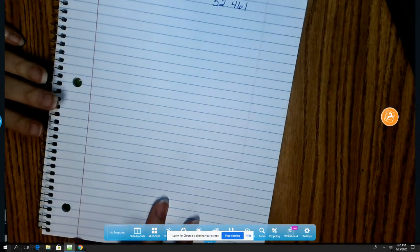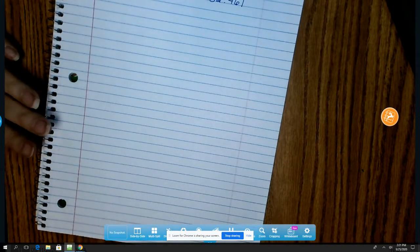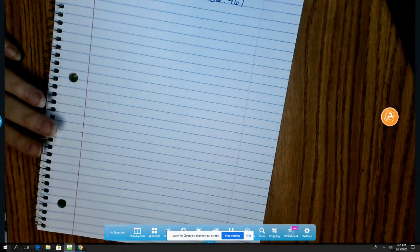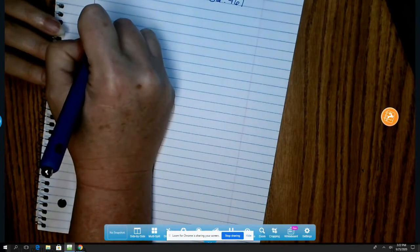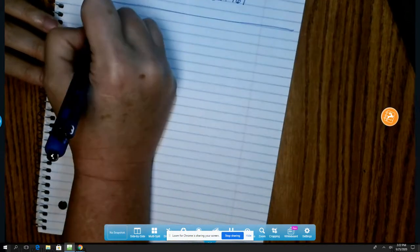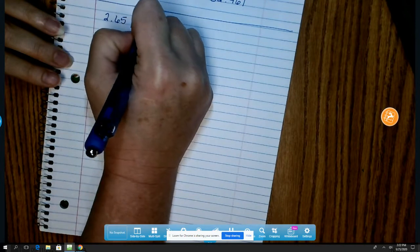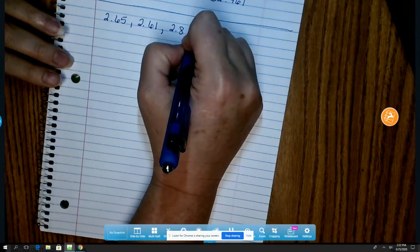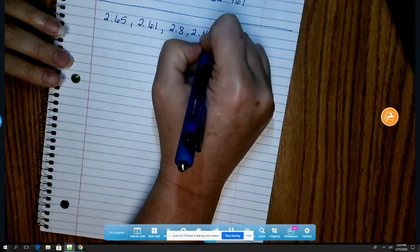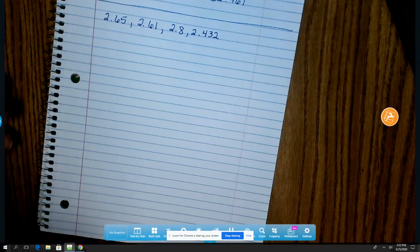So the next thing I want us to talk about is how to order a series of numbers, either from largest to smallest or biggest or smallest to largest. Sometimes we may hear them described slightly different. Let's take a look at these numbers. 2 and 65 hundredths, 2 and 61 hundredths, 2 and 8 tenths, and 2 and 432 thousandths. That's a lot of numbers in a row. And you certainly can do it this way.